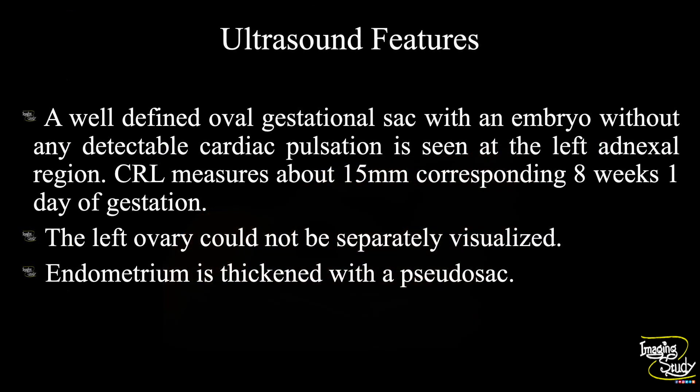In summary, a well-defined oval gestational sac with an embryo without detectable cardiac pulsation is seen at the left adnexal region. Crown-rump length measures about 15 millimeters, corresponding to eight weeks and one day of gestation. The left ovary could not be separately visualized. The uterine endometrium is thickened with a pseudo gestational sac. There was no peritoneal collection.